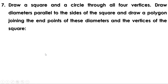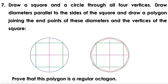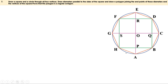Next problem: Draw a square and a circle through all four vertices. Draw diameters parallel to the sides of the square and draw a polygon joining the endpoints of these diameters and the vertices of the square. Prove that this polygon is a regular octagon. Let the octagon be ABCDEFGH and let PQRS be the points of intersection of the diameters with the sides of the square. Let O be the center of the circle. Consider triangles AHP and ABP.